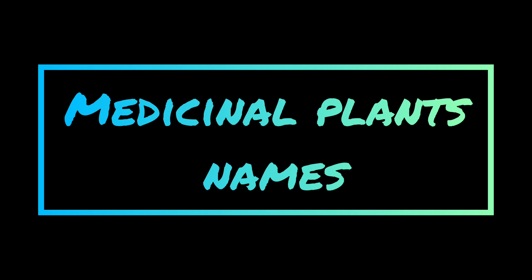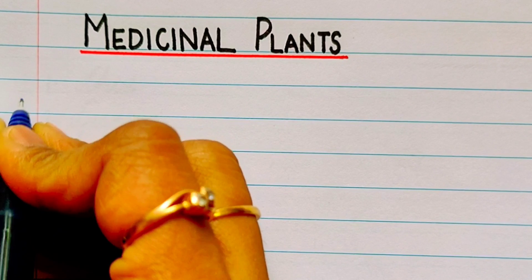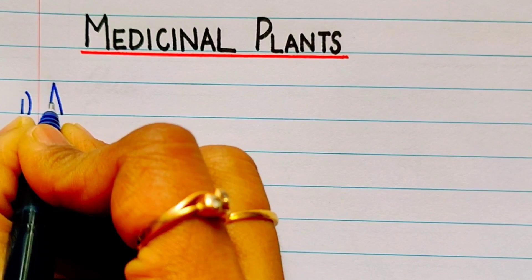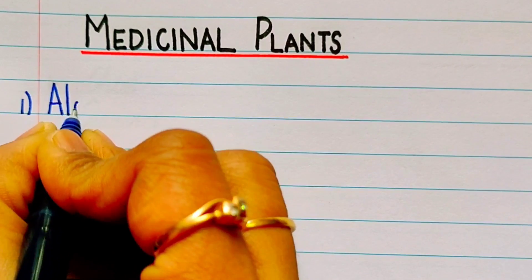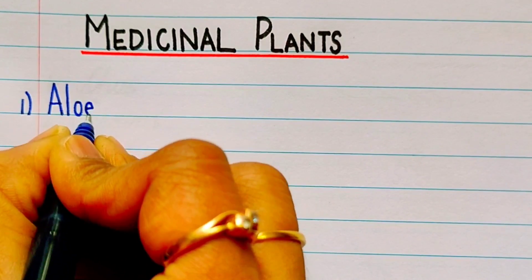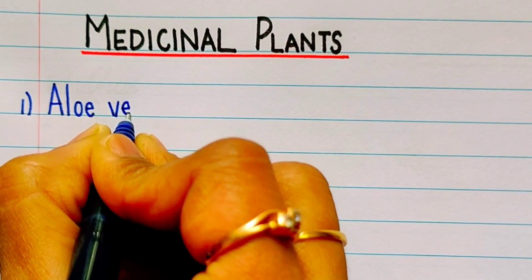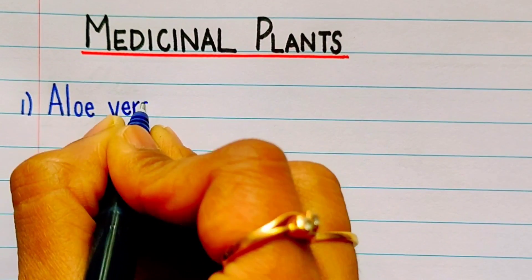Hi friends, in this video we are going to write 20 medicinal plants name. First one is aloe vera, A-L-O-E-V-E-R-A.